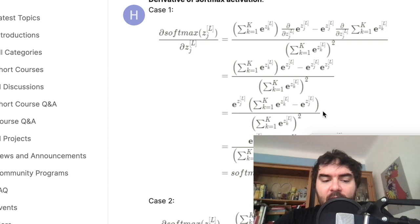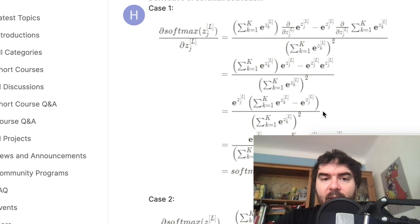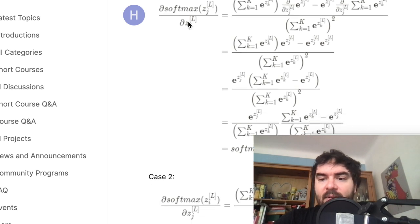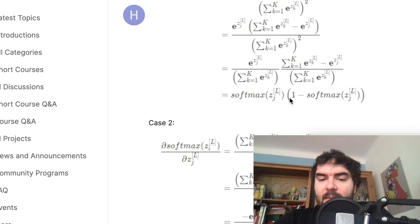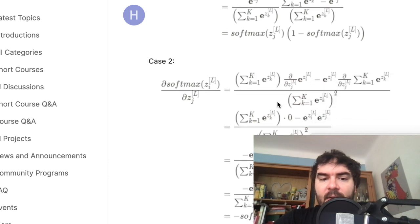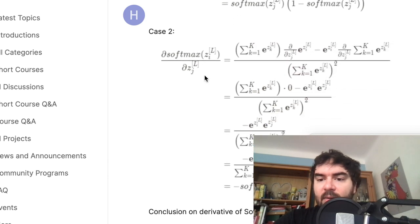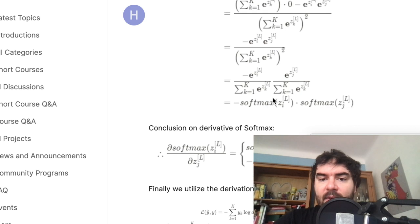You know, you have the softmax, you take the derivative, and then what comes out is this nice product. And if you take the derivative in another direction for another variable, then you have some other expression, and it's always nice and so on and so forth.